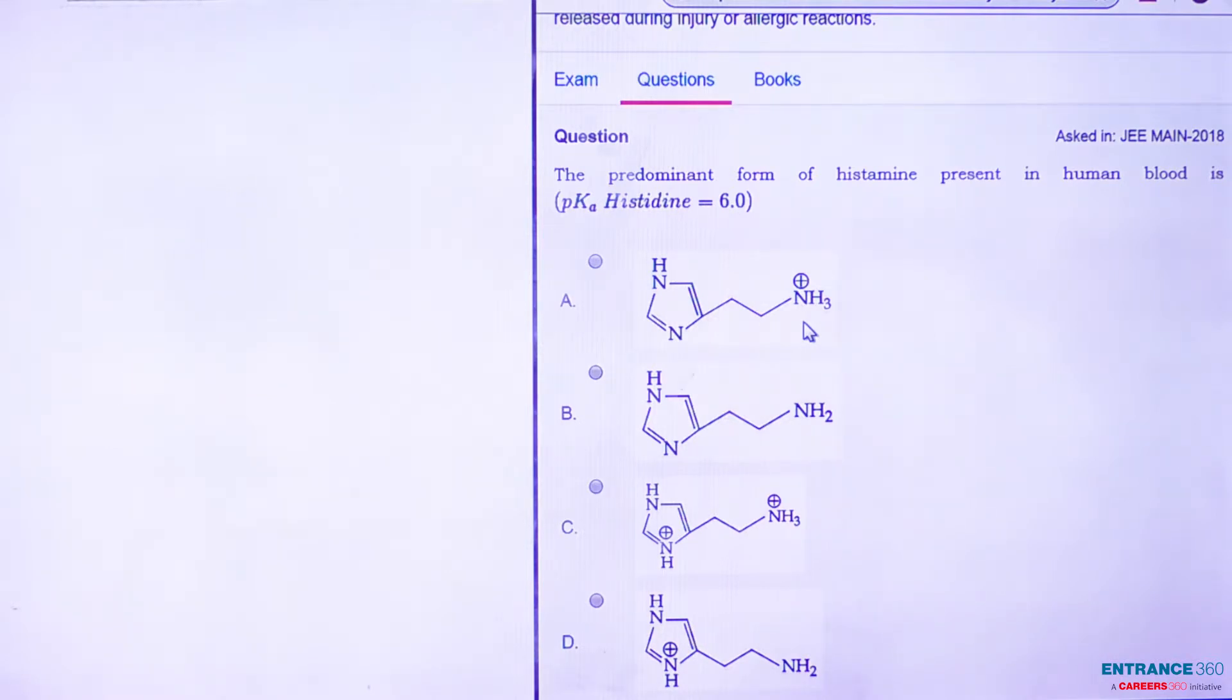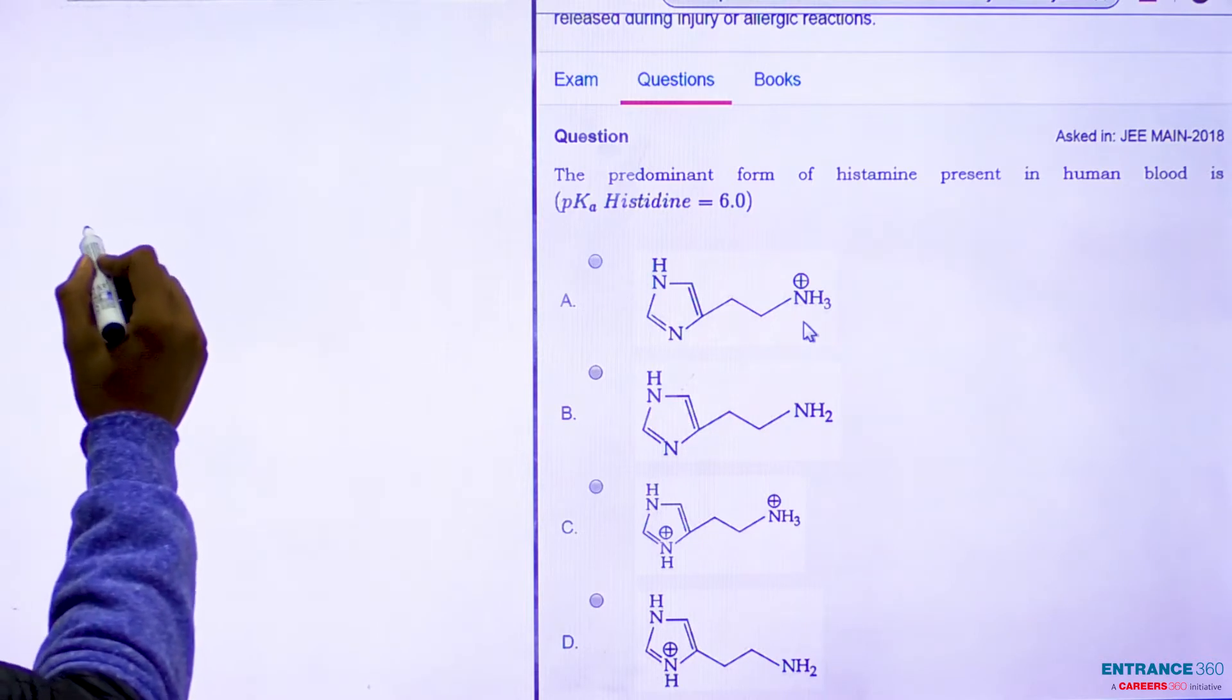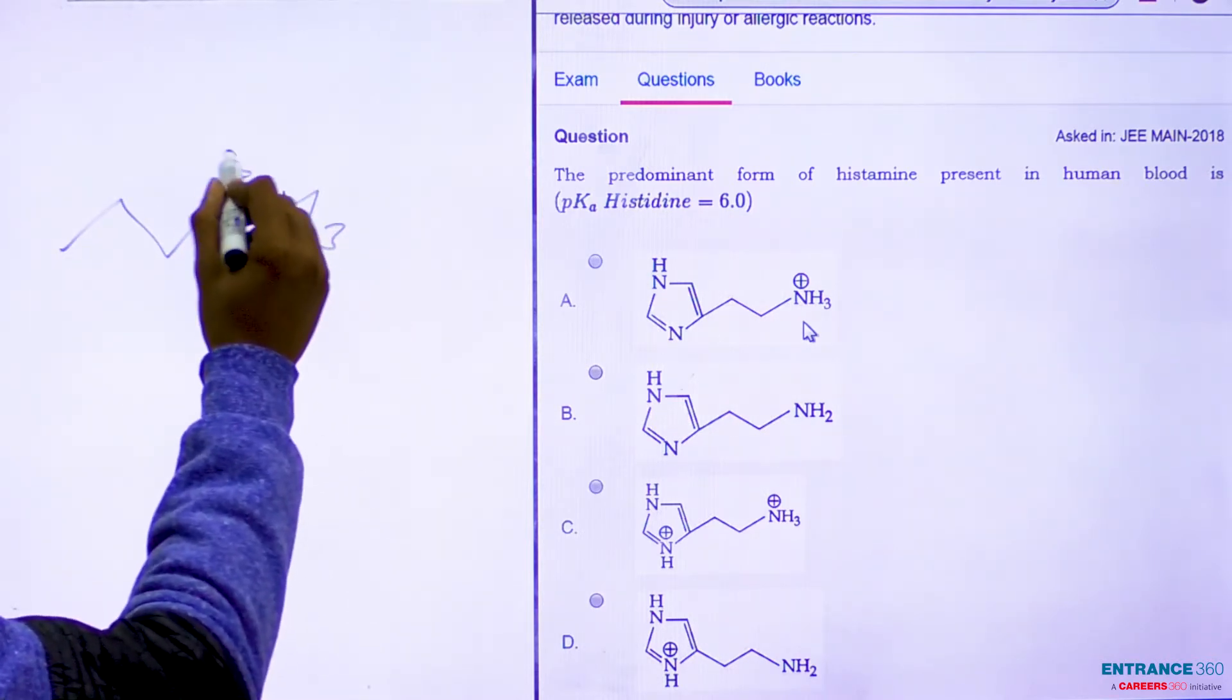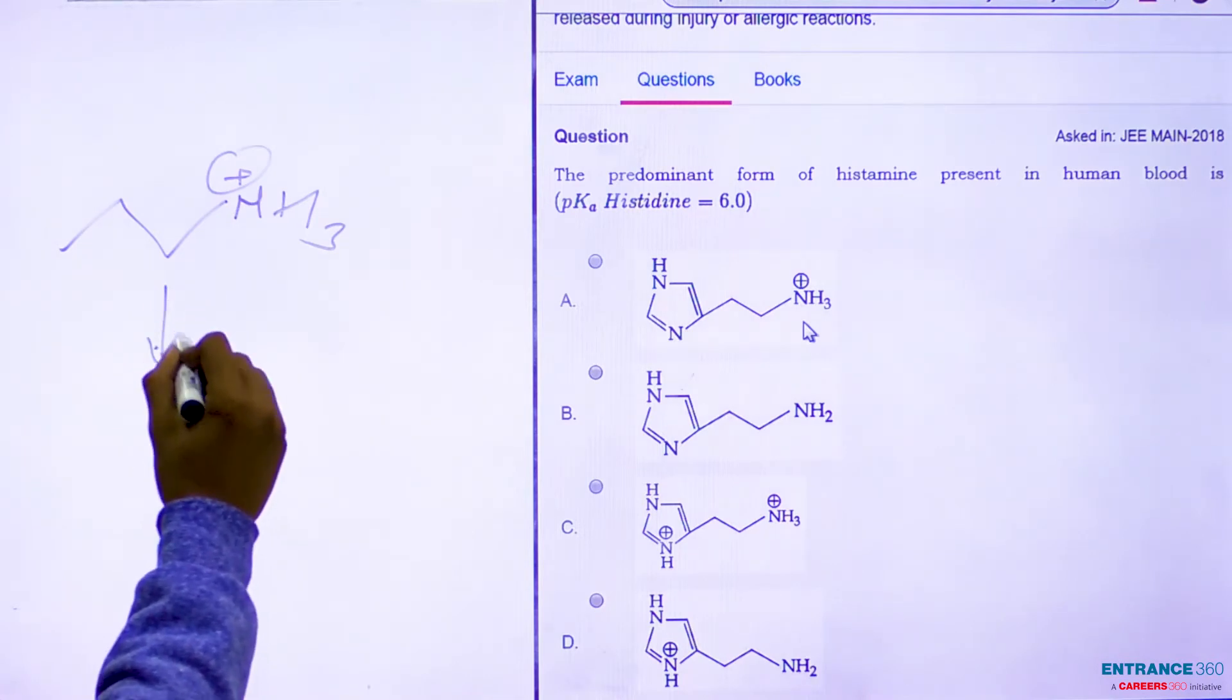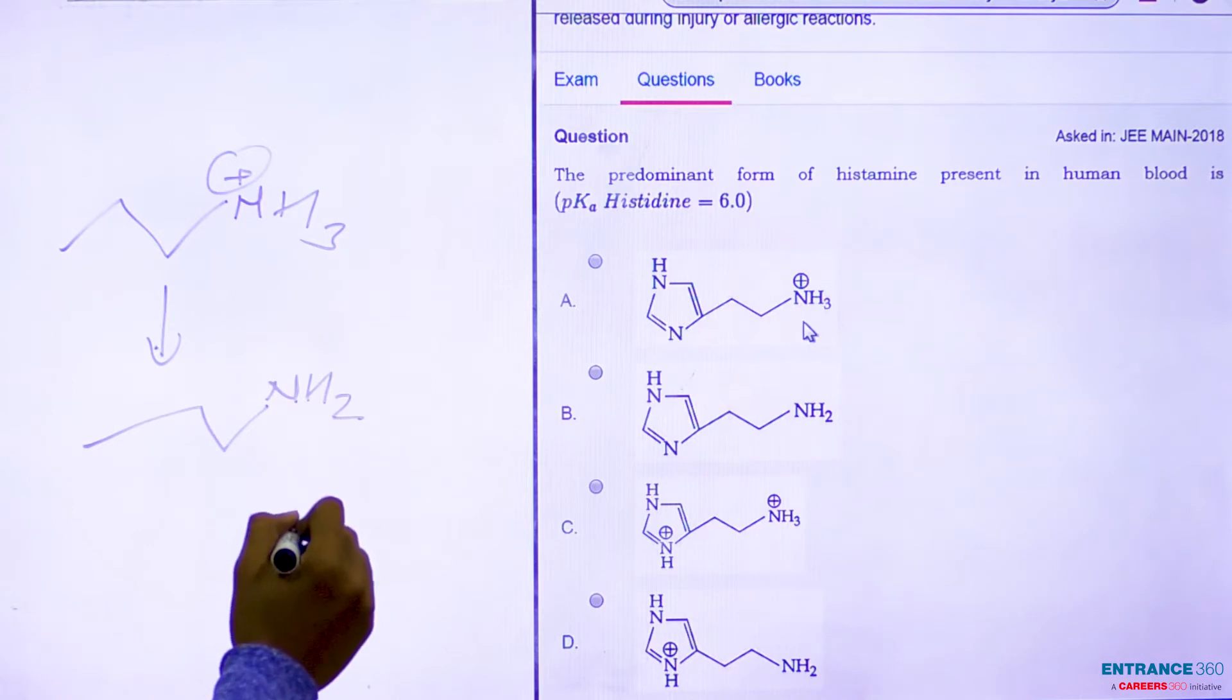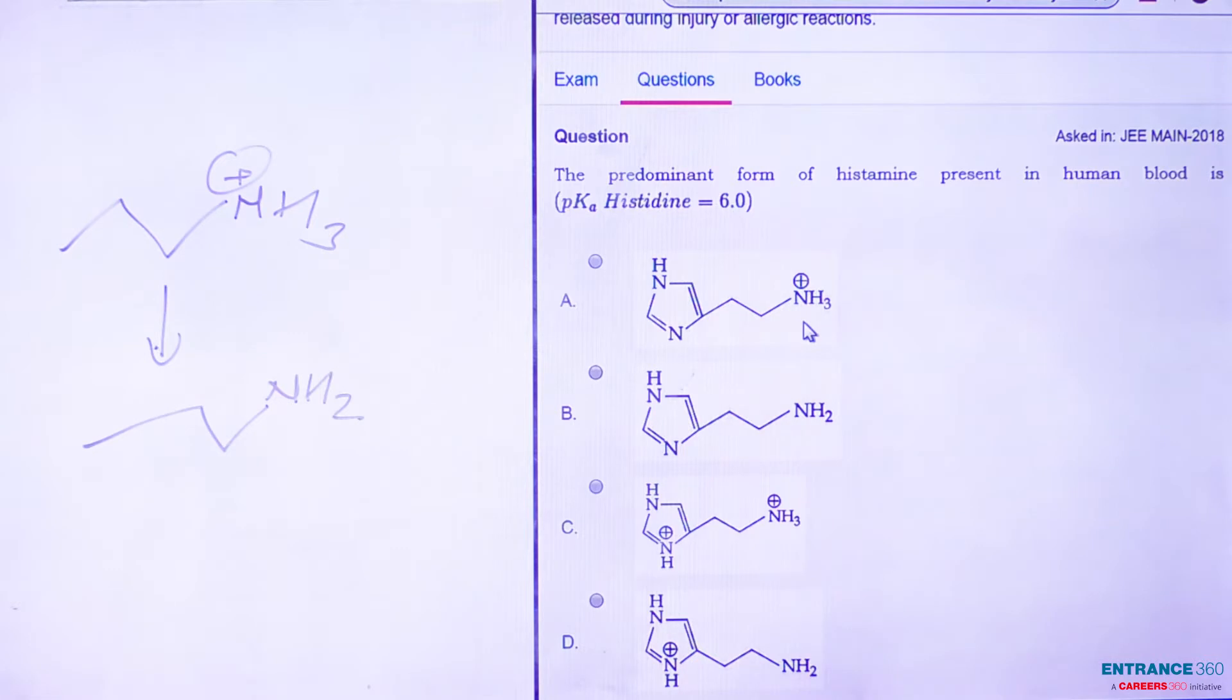So if we look at the options given, we can see that in option number one, it is the most basic hydrogen because earlier it was present in the form of NH2 and it gets protonated. So option one is the correct answer.